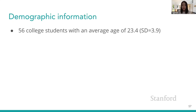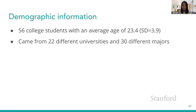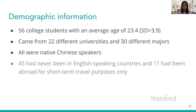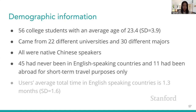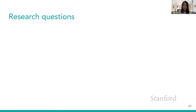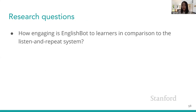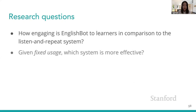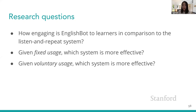We recruited 56 college students with an average age of 23.4 years old from 22 different universities and 30 different majors, all native Chinese speakers. 45 had never been in English-speaking countries before, and 11 had only been abroad for short-term travel. Users' average total time in English-speaking countries was 1.3 months. Similar to QuizBot studies, we examined which system is more engaging, which is more effective given fixed usage, and which is more effective given voluntary usage.